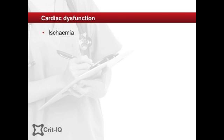Silent ischaemia is another potential cardiac cause of failure to wean. Increasing cardiac work and reduced oxygen delivery associated with weaning may contribute to cardiac failure. Assessment of cardiac function, including objective measures such as echocardiography, troponin, and BNP, may facilitate introduction of measures that can offset these effects, such as diuresis, fluid restriction, ACE inhibitors, antihypertensive medications, and other vasodilators.